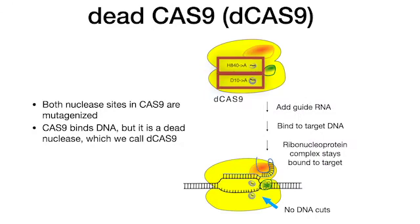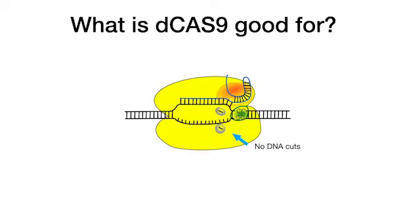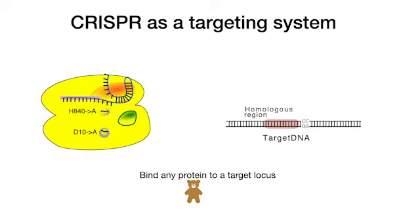If we mutagenize both endonuclease sites, we obtain a dead Cas9 — a D-Cas9. The resulting nucleoprotein cannot cut DNA, but it still binds the target site. What is this good for? CRISPR Cas9 becomes a targeting system that can bring any protein to any locus.